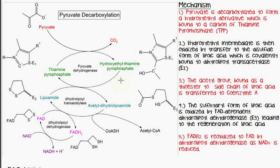The hydroxyethyl intermediate then gets oxidized by transfer to the disulfide form of lipoic acid — lipoamide — which has two sulfur groups. Remember that lipoamide, the disulfide form of lipoic acid, is covalently bound to the second enzyme of the complex, which is dihydrolipoyl transacetylase.